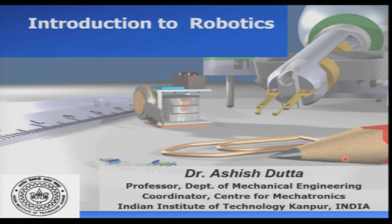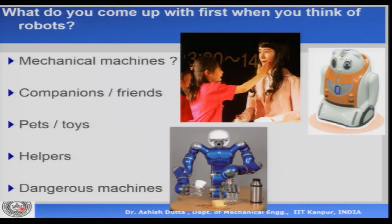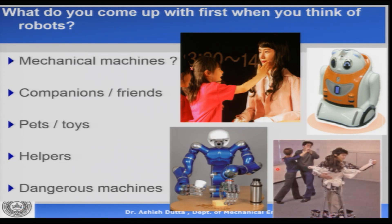Welcome to this course on Introduction to Robotics, where we will be studying various issues which are basic to the study of robotics. When you think about robotics or the word robot, what is the first thing that comes to your mind? To some of you it would be something like a mechanical arm, for some it could be a toy, some could be a helper, some kind of a mechanical slave, or it could be something which is dangerous. These are various things that come to your mind if you hear the word robot.